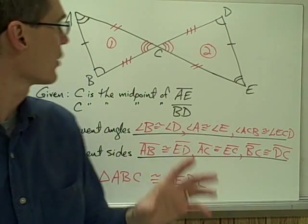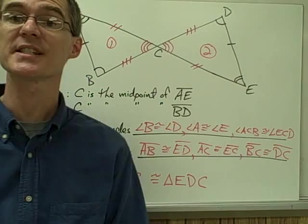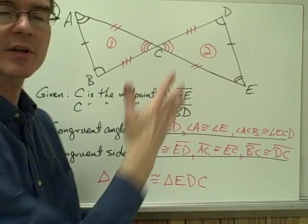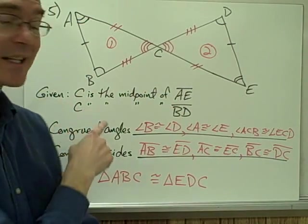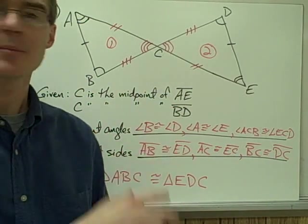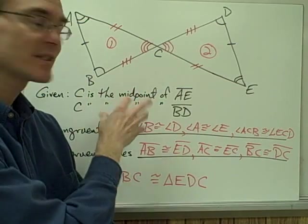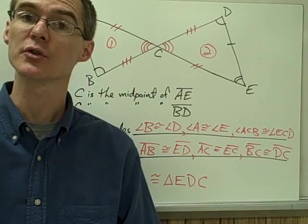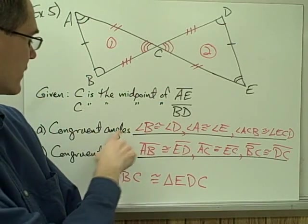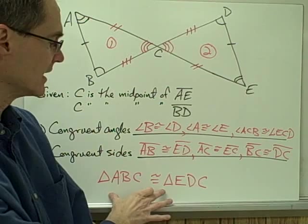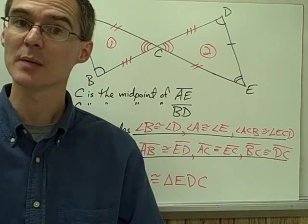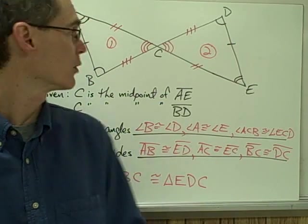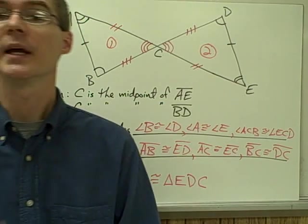You have some more examples — example number six and number seven — where again you're given not just a drawing with congruence markings but also given statements. You have to take what's in the given statements and use that to mark your triangle, make the correct congruence marks, identify the congruent angles and sides, and come up with the correct congruence statement. We'll take a look at those two examples, along with example number four, in class tomorrow.